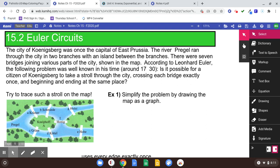15.2 Euler Circuits, or Euler Circuits depending on who you talk to. The city of Königsberg was once the capital of East Prussia. The River Pregel ran through the city in two branches with an island between the branches. There were seven bridges joining various parts of the city, shown in the map.